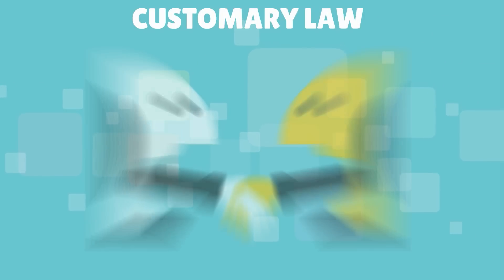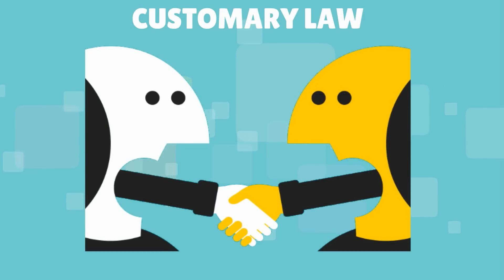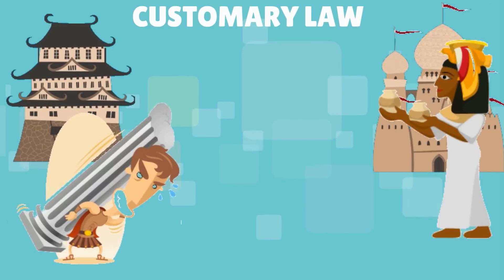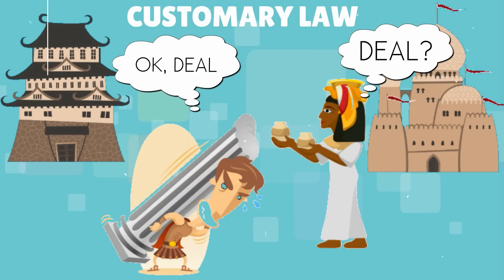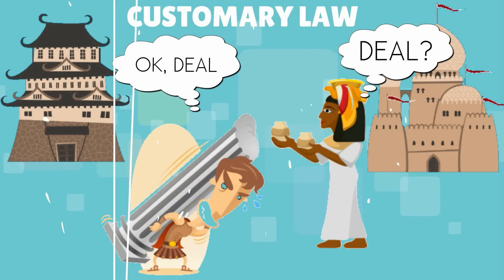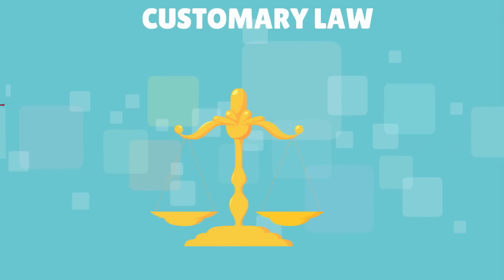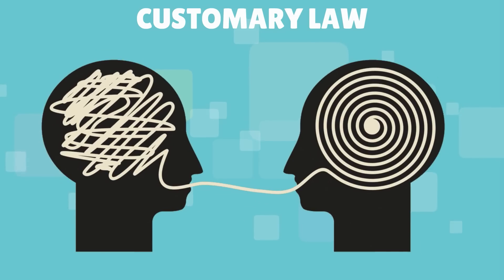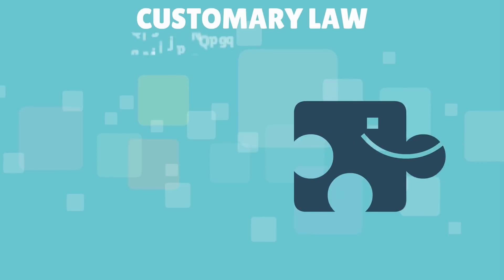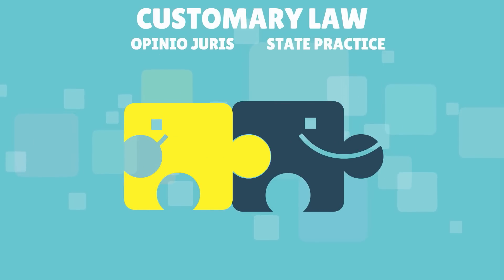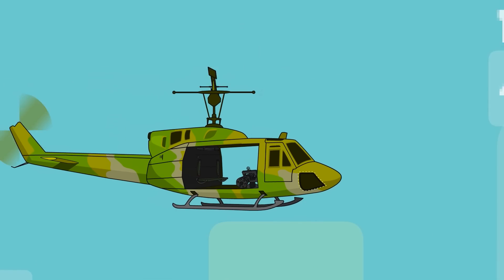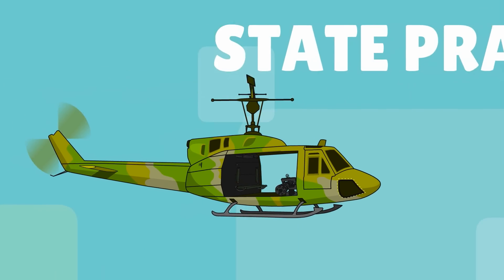The second source is customary law, as evidence of a general state practice accepted as law. At the outset, international law was mainly regulated by customs, which is an unwritten rule and consists of two parts: state practice and opinio juris.